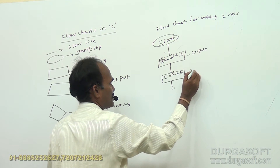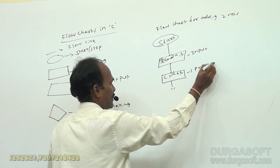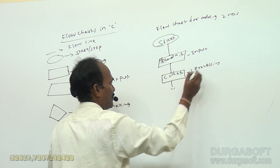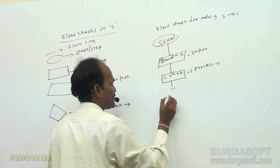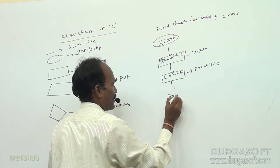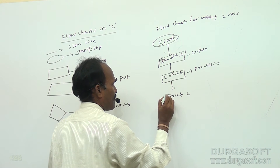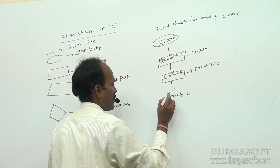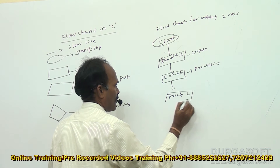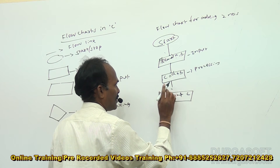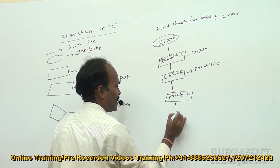For processing, we use the processing symbol with C equals A plus B. For displaying the output, we again use the input-output symbol and write: Print C. Then we close the flowchart using the stop symbol.